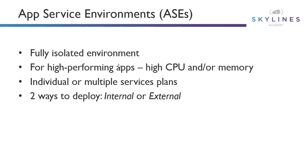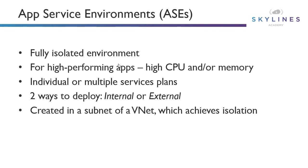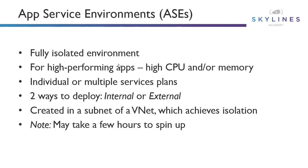There are two ways to deploy ASEs: internal or external. With an internal ASE, a VIP is created on an internal IP address and the internal endpoint is essentially an internal Azure load balancer — sometimes referred to as ILB ASE. With an external ASE, you use this option when you want your ASE to be directly accessible via the internet; after selecting your VNet, you select a number of external IP addresses to utilize. Importantly, this is created in a subnet of a VNet which achieves isolation. Note that ASEs may take a few hours to spin up — they're not just a button click away, as they are reserving dedicated compute specifically for you.